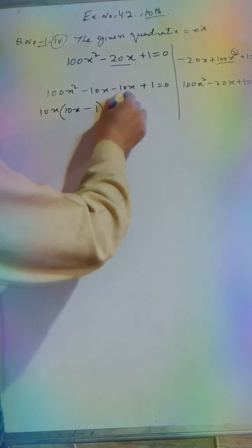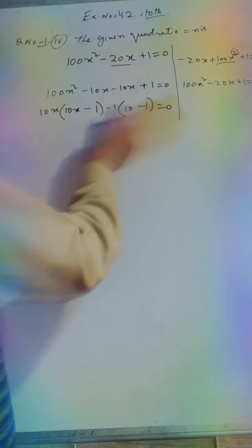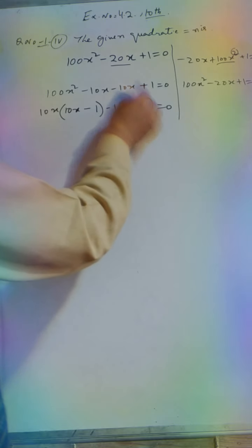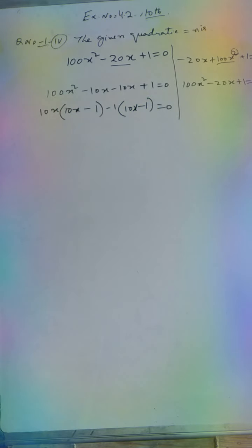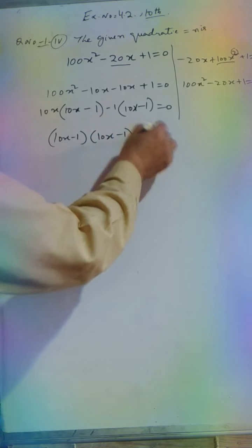Now we factor: 10x(10x - 1) - 1(10x - 1) = 0. This gives us (10x - 1)(10x - 1) = 0.